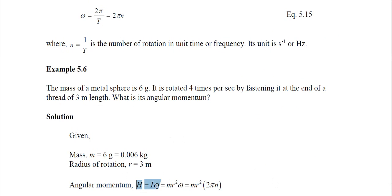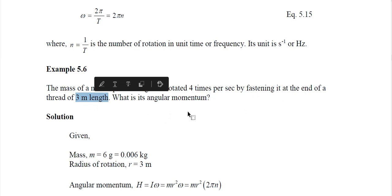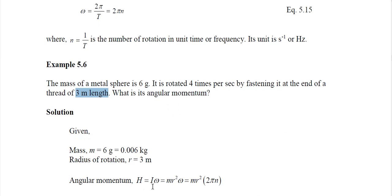Angular momentum is I×ω, and I = mr². The first example: the mass of a metal sphere is 6 grams. It is rotated 4 times per second by fastening it at the end of a thread of 3 meter length — that is our radius of rotation. We are considering the metal sphere as a small mass rotating around an axis. Angular momentum = I×ω. I is not directly known, so we derive I = mr², because this r is the radius of gyration — we concentrate all the mass at a small point.